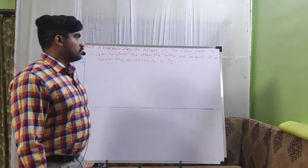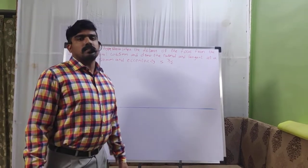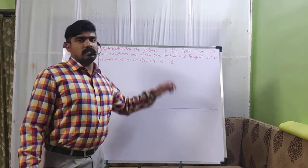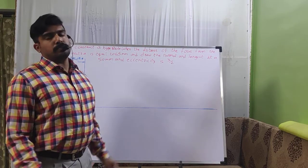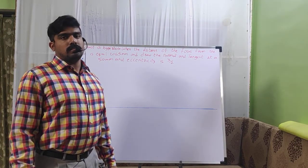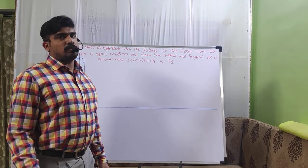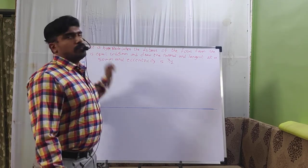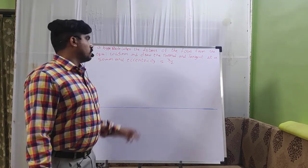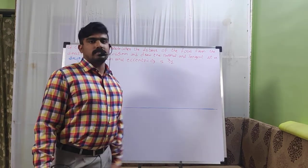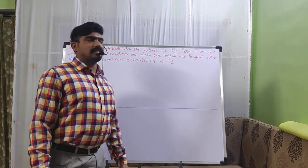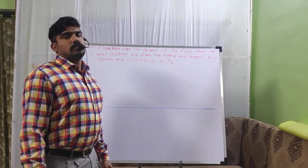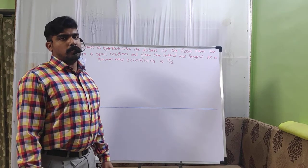The eccentricity value of 3/2 is greater than 1, and if the eccentricity value is greater than 1, it is called a hyperbola. In some questions they might not explicitly state it is a hyperbola — they just give you the eccentricity value. By seeing that value, we need to identify the conic section, which in this case is a hyperbola.